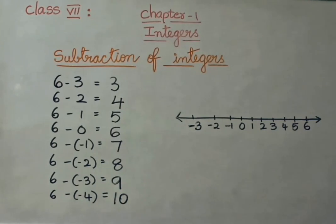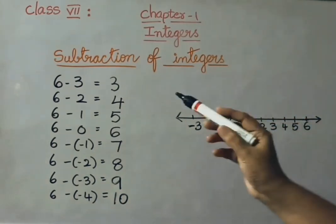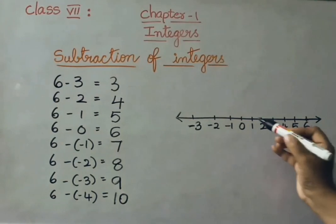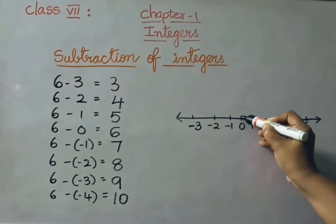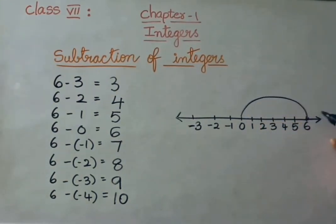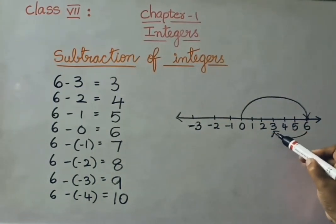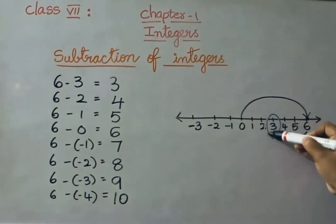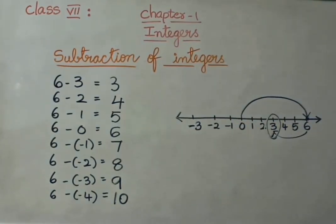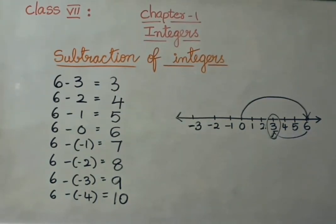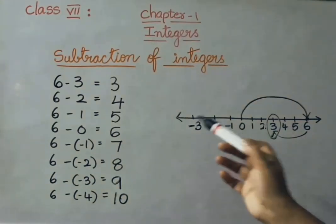Now let us see the number line. 6 minus 3 — let us represent. So what we have to do first? Show 0 onwards 6. We have shown 0 onwards 6. Minus 3 means 6 onwards backwards, count 3 numbers. So we got 3. So 6 minus 3 answer is also 3 on the number line. When we subtract 3 from 6, we move left side on the number line.